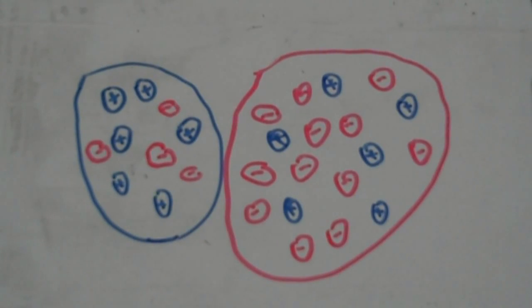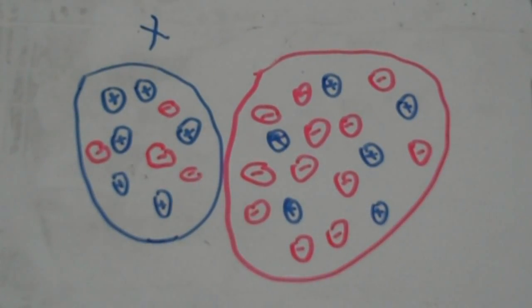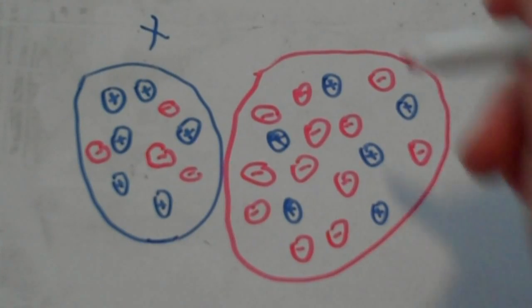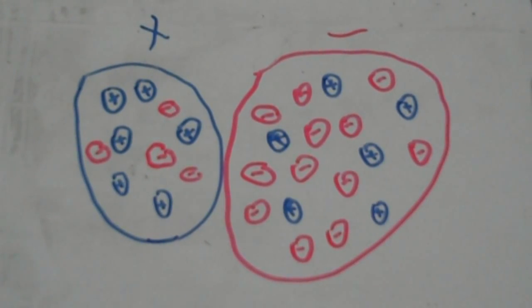Static electricity occurs when two objects — one with a lower than average number of electrons and the other with a higher than average number of electrons — interact. Since positives and negatives attract, these two objects will stick together, just as magnets do.